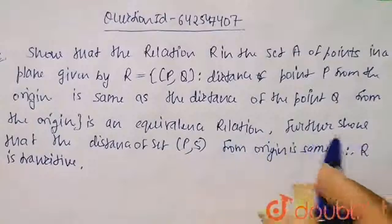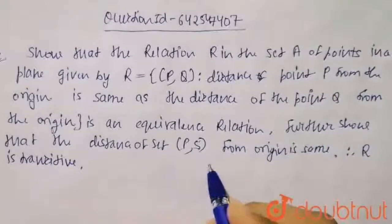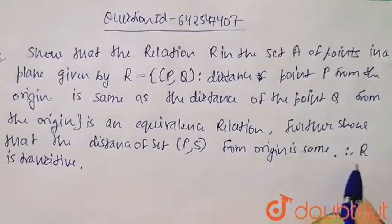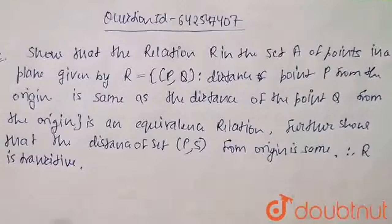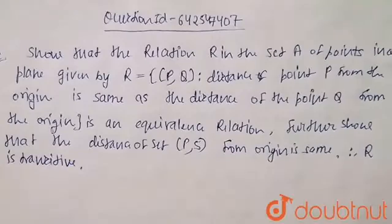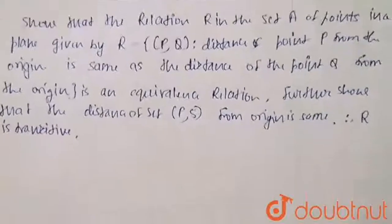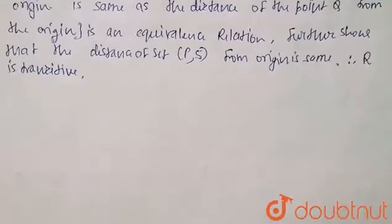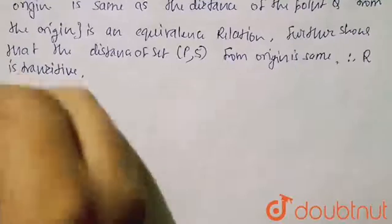Further, show that the set of all points related to a point P, where the distance of point P and S from the origin is same, and R is transitive. So let's solve this question by understanding each line one by one.